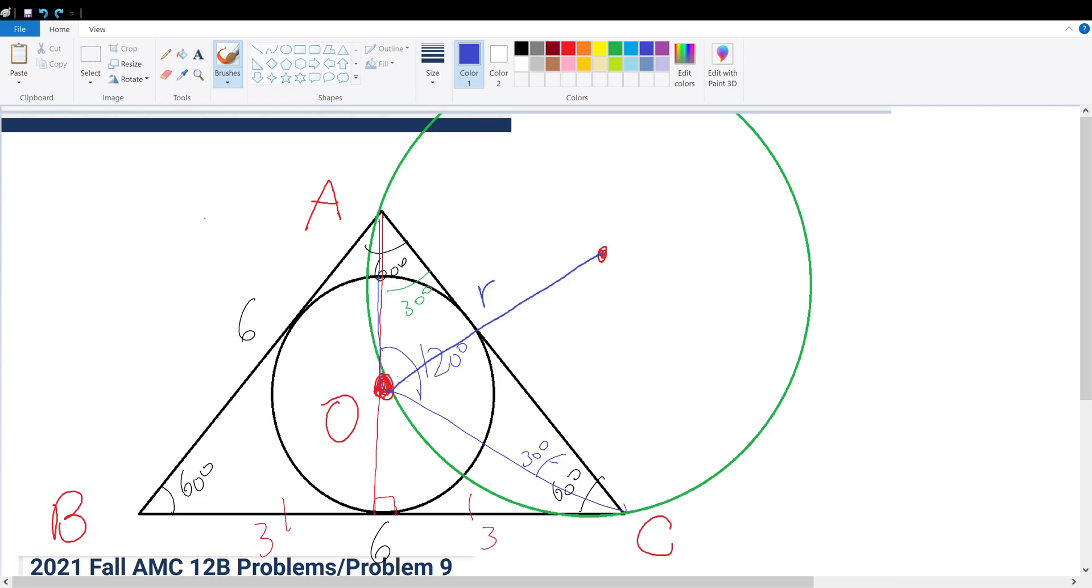we can also see that if we draw some more lines out here, like R and R, we see that these two triangles are symmetrical to each other. So this will be 60 degrees, that will be 60 degrees, 120 divided by 2.